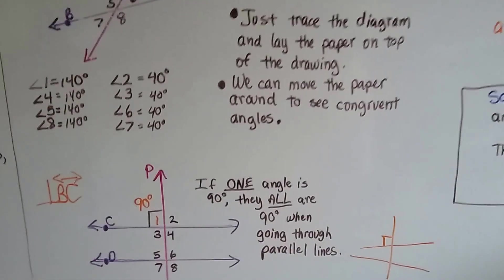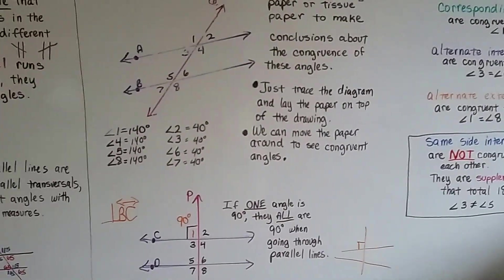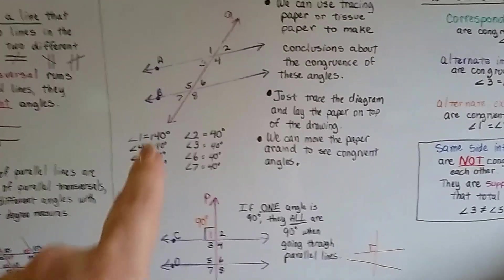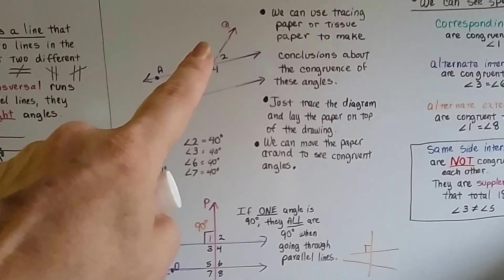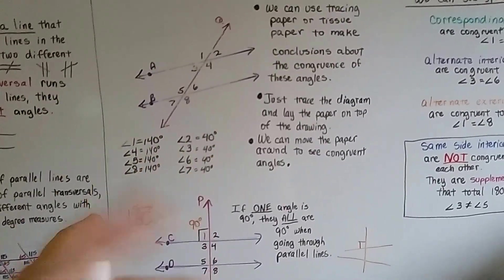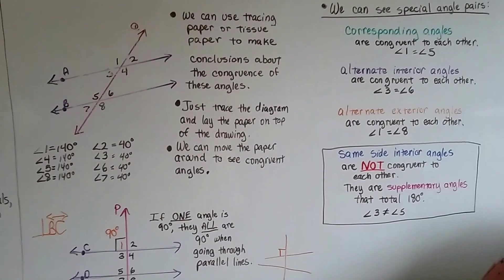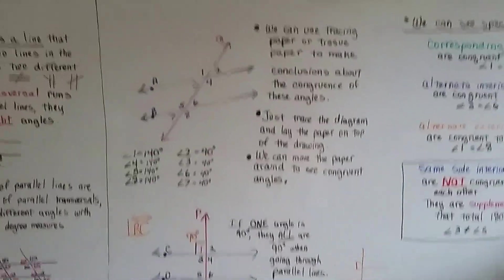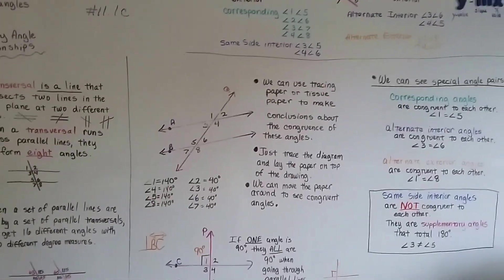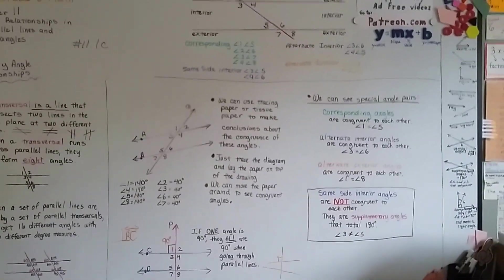So we're going to talk about finding a missing measure in the next video. And you can already see from these that if one of these measures were missing, we'd be able to find it, wouldn't we? Because it would be either 140 or 40, right? And knowing these rules, we'd be able to find a missing measure. So we're going to talk about that in 11.1d. And we're moving forward. And I'll see you next video. Bye.